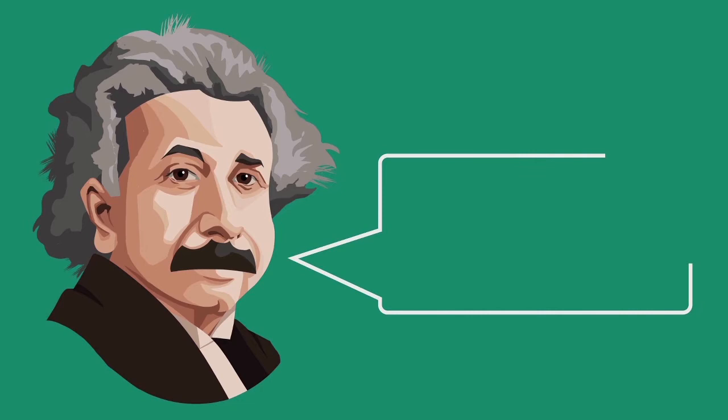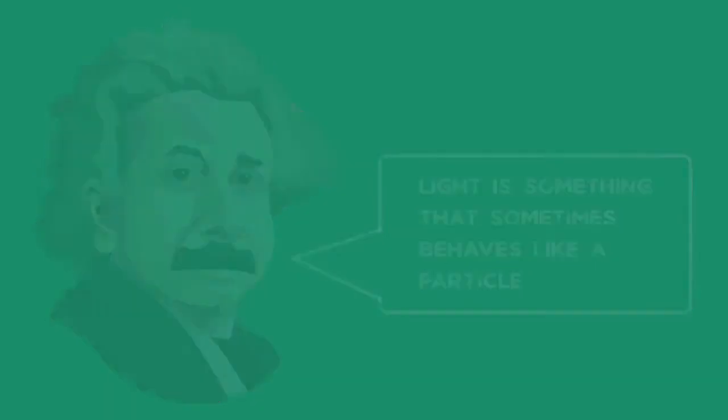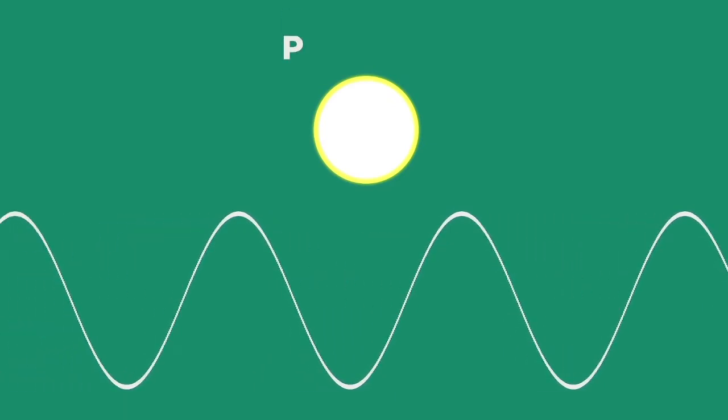The confusing thing that changed physics forever is that Einstein first explained light as also sometimes behaving like a particle. Electromagnetic waves can behave like particles of energy, which he called photons, and this explained how light was able to carry energy through the vacuum of space without a medium.